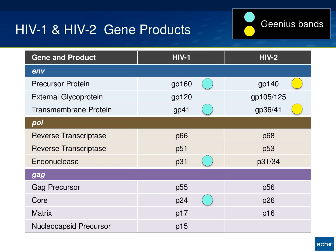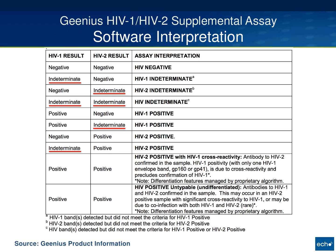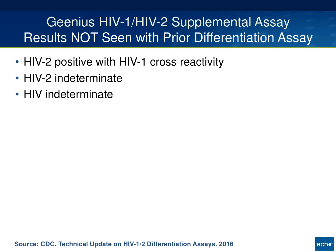The Genius is somewhat like a western blot and is definitely different than the older multi-spot differentiation test. Software interprets the patient sample with great sensitivity, but based on the number of bands that can appear, you can get a number of indeterminate results. For clinicians, this is probably the most confusing thing seen in testing recently. Specific results now seen include: HIV-2 positive with HIV-1 cross-reactivity, HIV-2 indeterminate, and HIV-1 indeterminate.